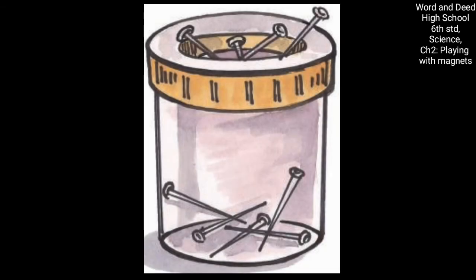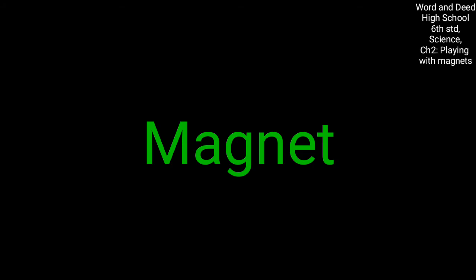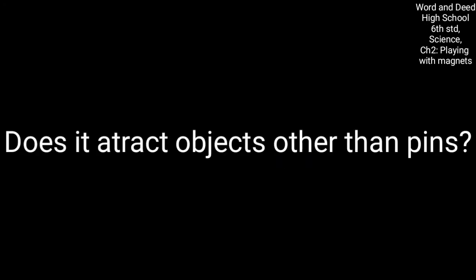Why do the pins get attached to the cap of the pin holder? There is something in the cap of the pin holder. What might that be? Yes, that's right. What might that be? Magnet. What could be there in that cap? That means magnet. And does it attract objects other than pins? What are they? Can you guess the answer to this question?